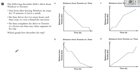Let's look at the next question. The following describes Ehab's drive from Windsor to Toronto. So one hour after leaving Windsor, he stops to have a snack. He drives for two more hours and then stops to visit a friend for an hour. He then completes his drive to Toronto at a faster rate than any other segment. Which graph best describes his trip? So the first thing I notice when I look at these graphs, if we've got two graphs that are kind of doing this and two graphs that are doing this. So the first thing I want to do is figure out which one, which direction makes sense so I can cross off two out of these graphs.